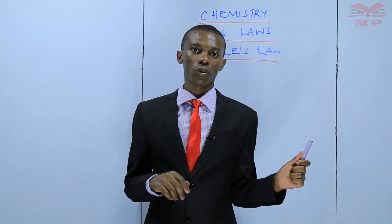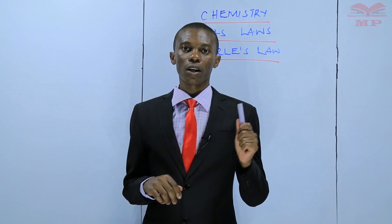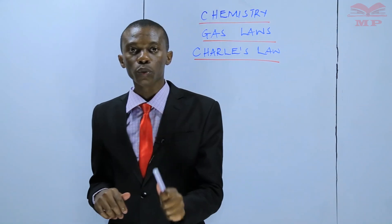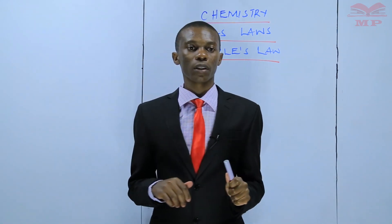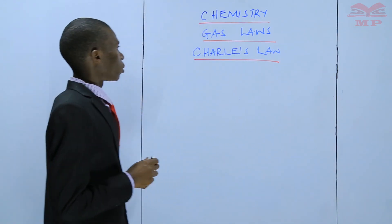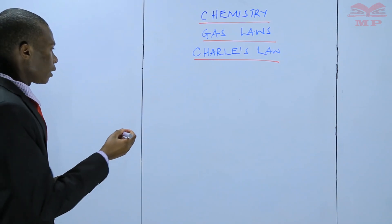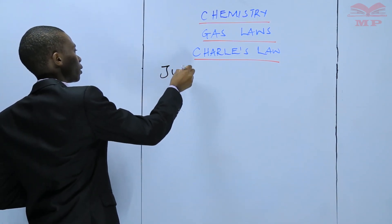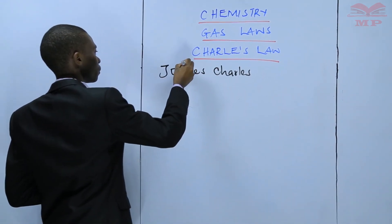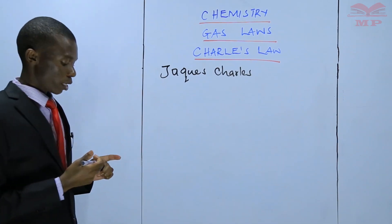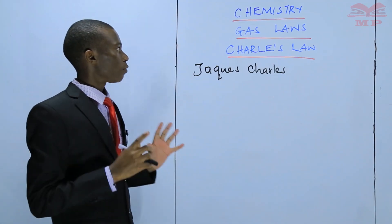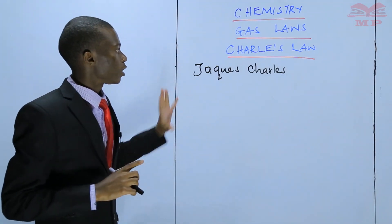In our previous lessons, we have been discussing all about Boyle's Law. And in this lesson, I'm going to introduce you to another law, which is Charles' Law. Charles' Law was named after a scientist called Jacques Charles — that is the person who came up with Charles' Law, and therefore the law was named after him.